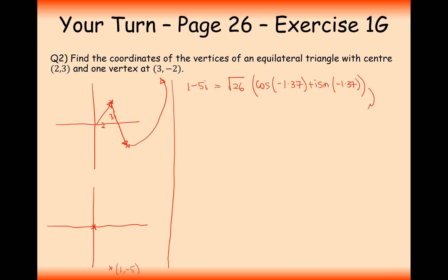So that's √26(cos(-1.37) + i sin(-1.37)). And now we'll just add 2π by 3 onto the argument. So the next answer is going to be cos plus adding 2π by 3, and then we'll add 2π by 3 round again.